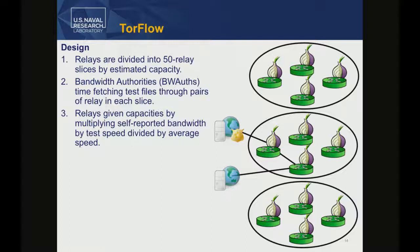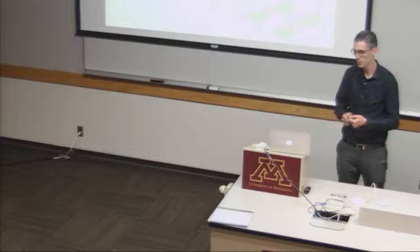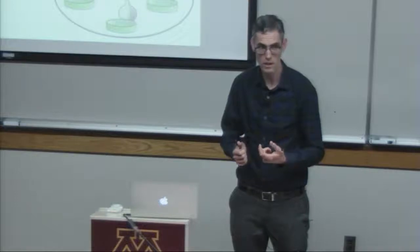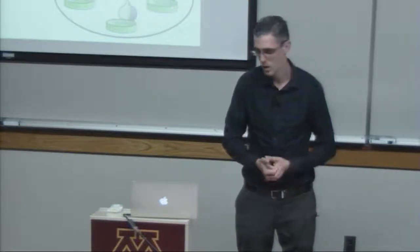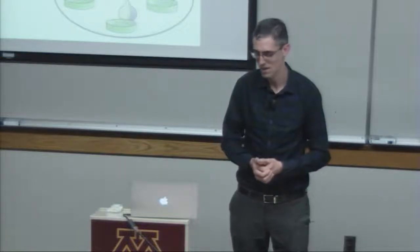TorFlow works as follows: relays are divided into 50 slices by what TOR currently thinks their capacity is. Then bandwidth authorities (BWAUTHs) choose two relays in a given slice, create a two-hop circuit, download a test file, and measure how long it took. Relays are paired within slices so you're not limited by a partner's bandwidth. Each relay gets a relative speed by averaging all download speeds it participated in, divided by the average of all download speeds across the network, then multiplied by its self-reported advertised bandwidth.